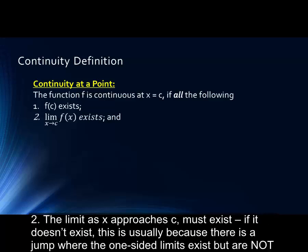Number two, the limit as x approaches c must exist. Here, if this doesn't exist, this is usually because there is a jump, where the one-sided limits exist but are not the same.